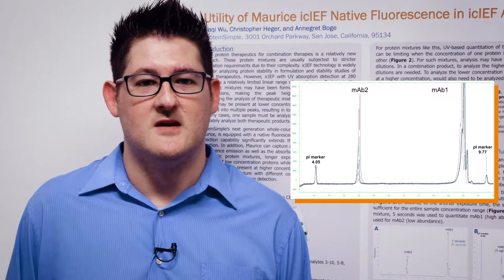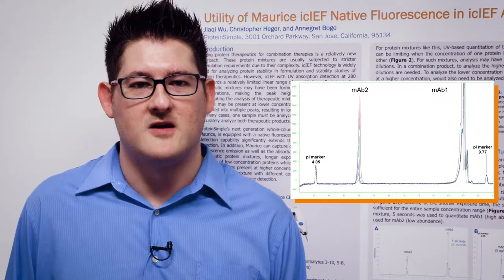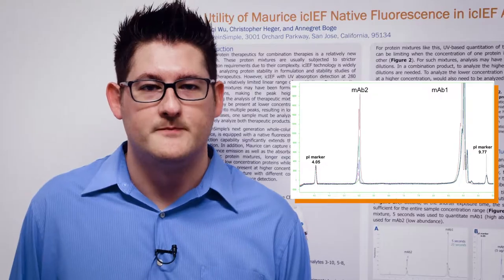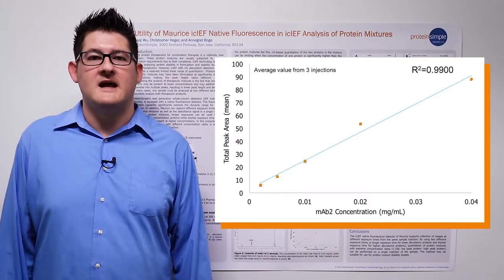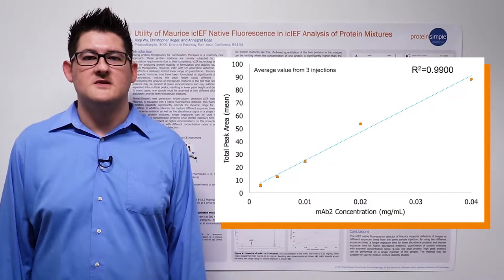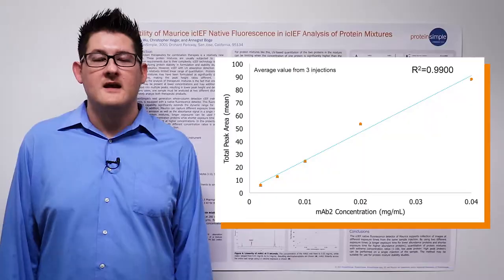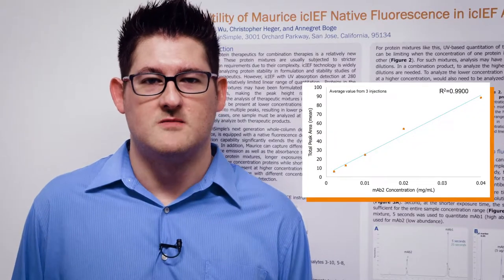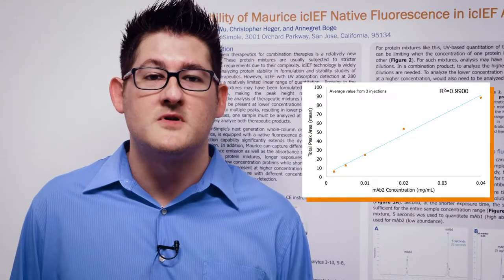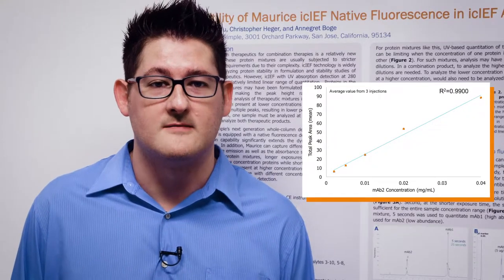Using the same dilution series and a 20-second exposure, we can now look at MAB2. As shown in Figure 5, the linearity for MAB2 is also greater than 0.99, again indicating an excellent correlation between sample dilution and resulting peak area.